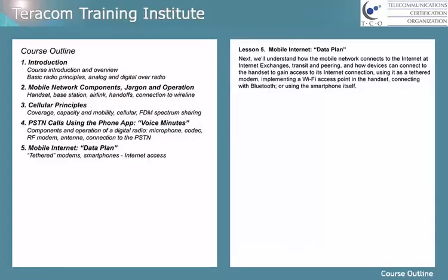Lesson five is mobile internet, also known as a data plan. We'll understand how the mobile network connects to the internet at internet exchanges, transit and peering, and how devices can connect to the handset to gain access to its internet connection — using it as a tethered modem, implementing a Wi-Fi access point in the handset, connecting with Bluetooth, or of course using the smartphone itself.